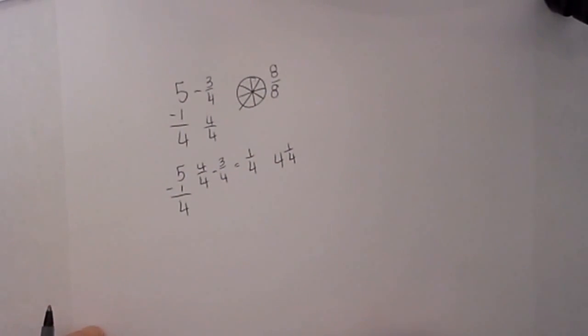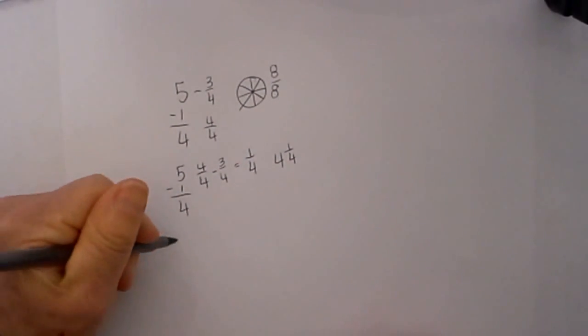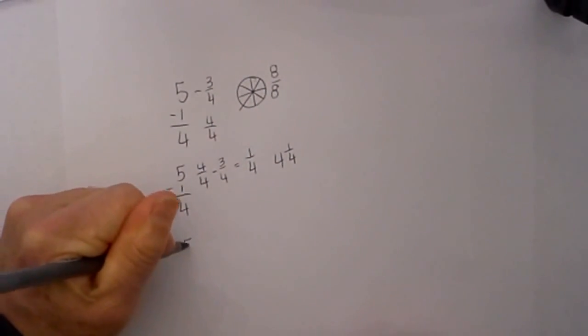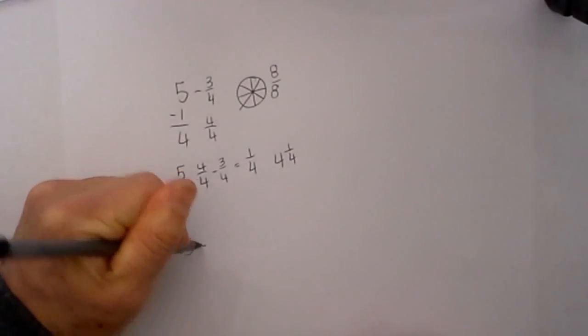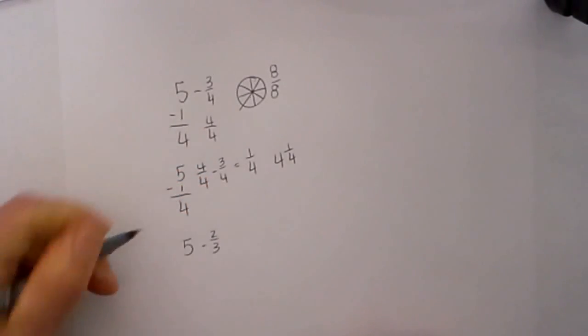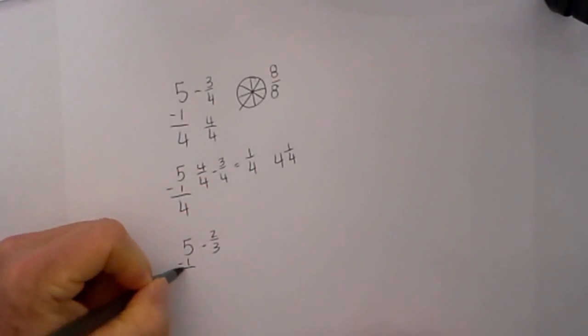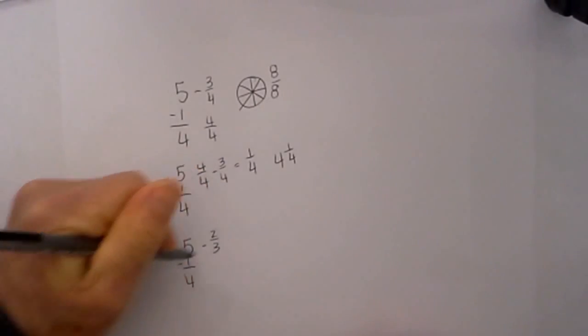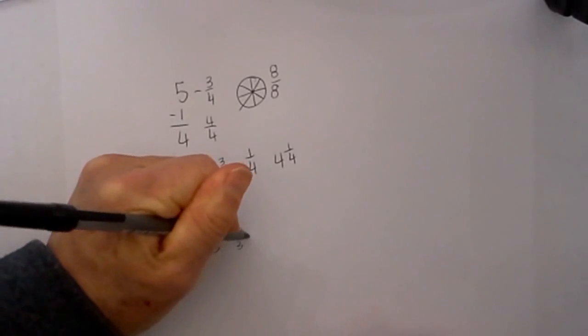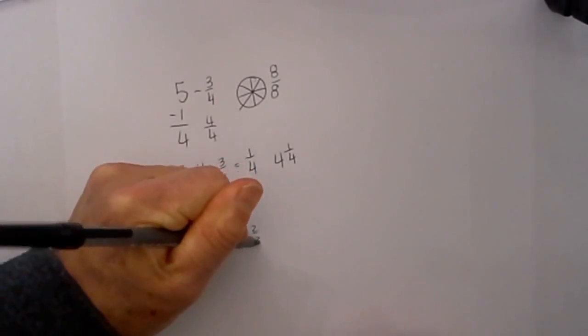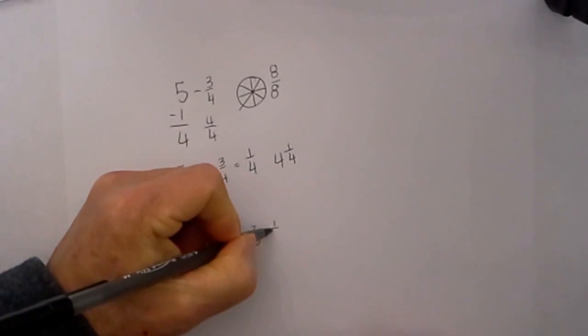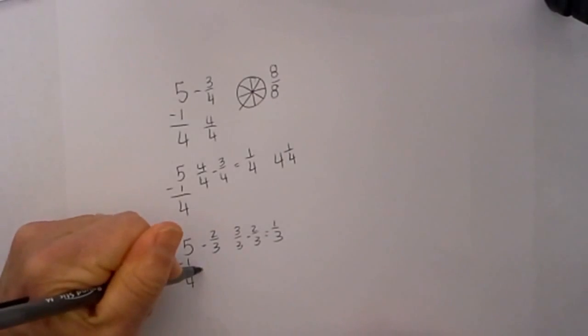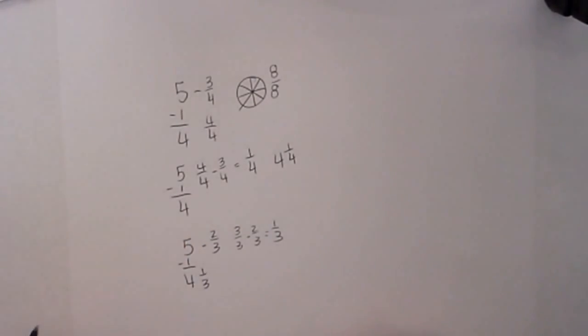Let me work a couple more. I think once you see 3 or 4 of these, you will see this is really easy. 5 minus 2/3: I will subtract 1 from the 5, that becomes 4. I will rewrite the 1 as 3 over 3 minus 2/3 equals 1/3. So it becomes 4 and 1/3.